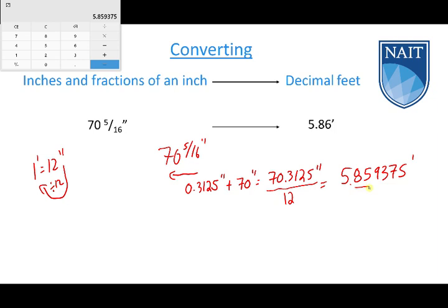And we talked about two places to the right of the decimal, so if it's 5, which it is here. Sorry, we want to round to that. So if this one here is a 9, that's going to round this 5 up to a 6, so it's going to be 5.86 feet.